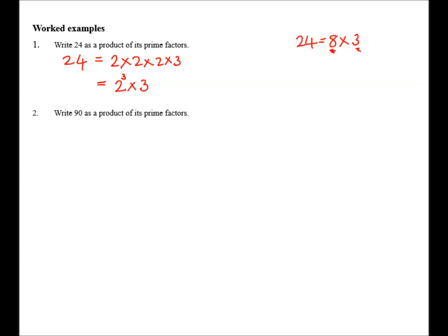The second example, write 90 as a product of its Prime Factors. Well, we will use the ladder method. And so, 90. What prime number will go into 90? So what I think, in my head, I make a list of the first few Prime Numbers. 2, 3, 5, 7, and so on.